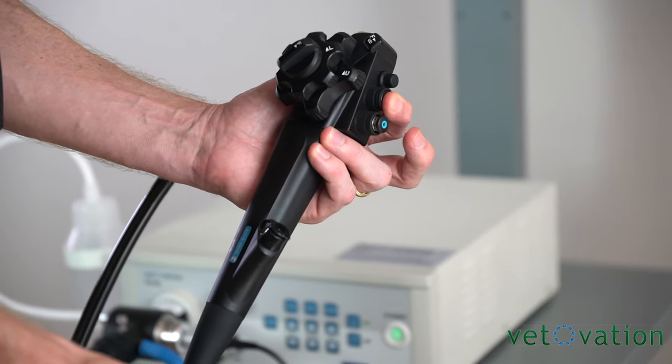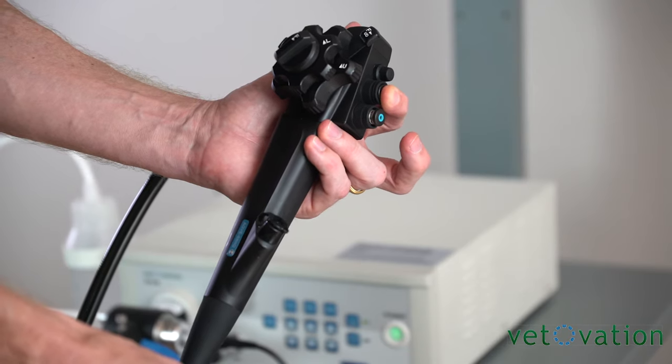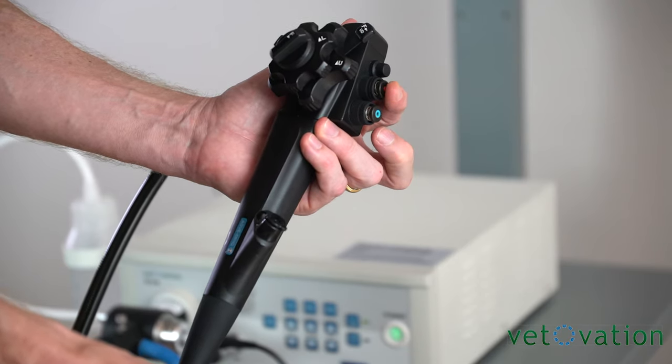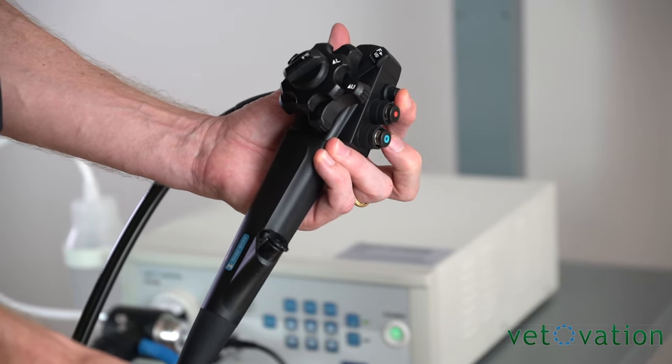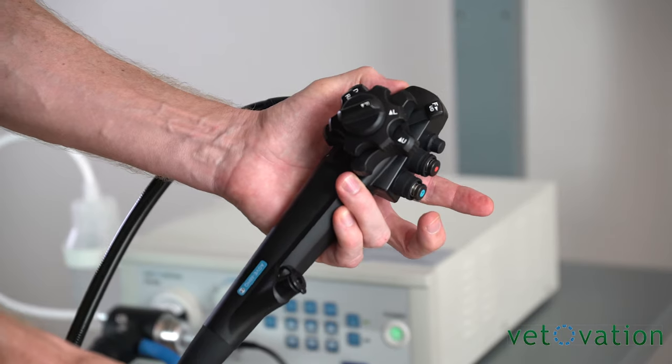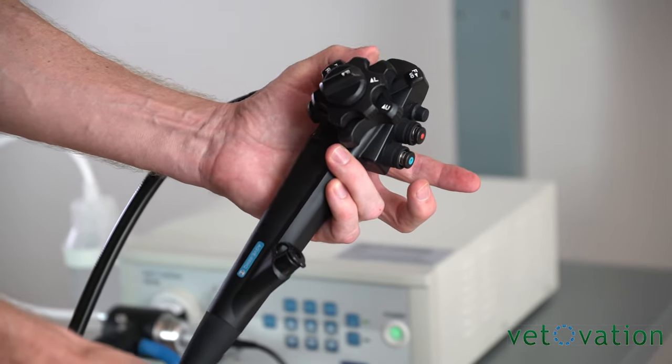The red button evacuates any air that's in the stomach at the end of the procedure or will also suck out any fluid. The button above the red button takes a still shot image. The button that's on your thumb turns video on or video off during the procedure.